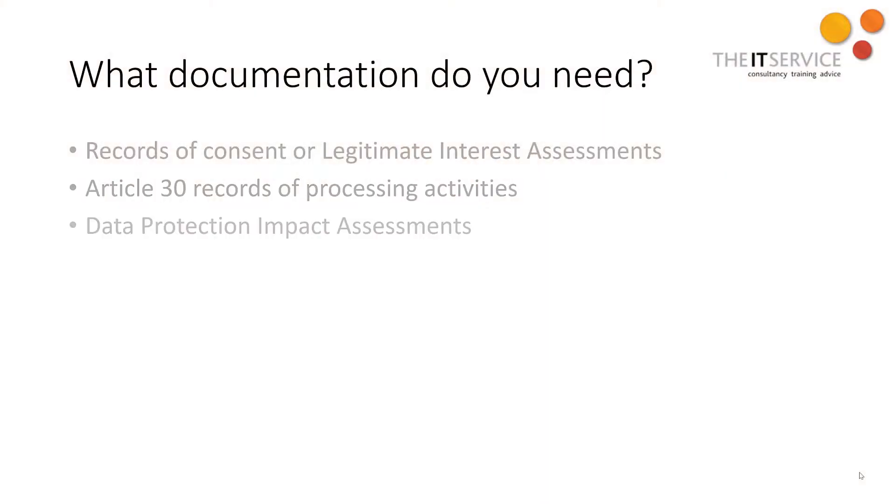Whenever you're about to begin a new process involving data — especially if that process involves new technologies, or there's likely to be a special level of risk to subjects because you're processing special category data, sensitive data, or doing something like profiling — you need to assess the impact of that data processing. You do that by conducting a data protection impact assessment, or DPIA. In this, you'll assess what data you're processing, whose data it is, and why your processing is proportionate — but above all, you're assessing where the risks are likely to be and how you can mitigate them. You need to document the output of this assessment.